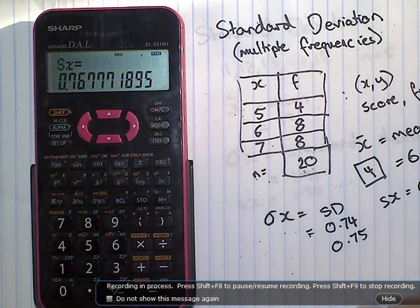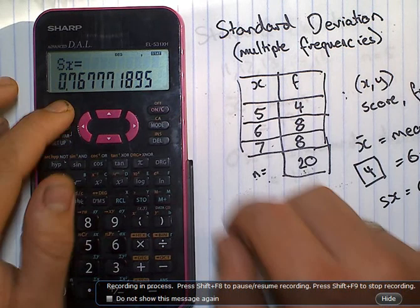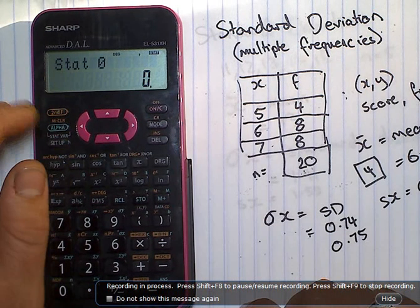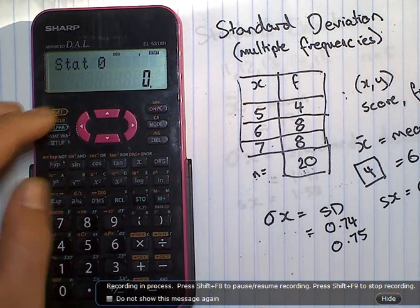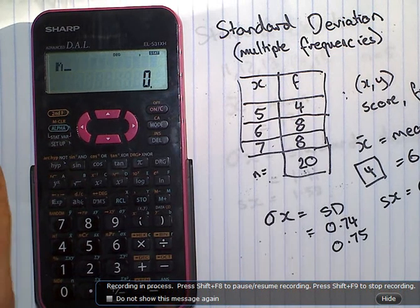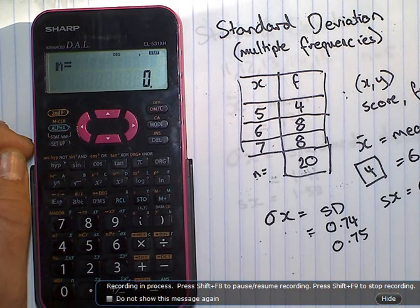So, last thing you want to do is make sure you've cleared it of all its data. Second F, CA. To check that you've cleared everything, alpha zero. N equals zero. Happy days. Thanks.